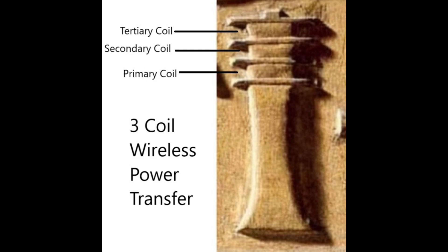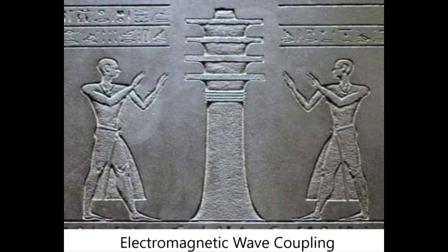The next scene I want to show you is this one. In this pictogram, we see in the center what I believe is a three-coil wireless transfer array. The coils are flanked by a couple who are performing an identical wave toward each other. I think this should be interpreted as electromagnetic wave coupling.